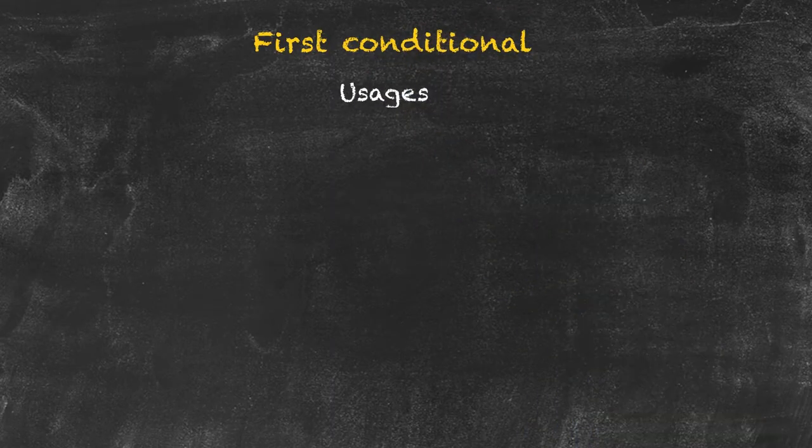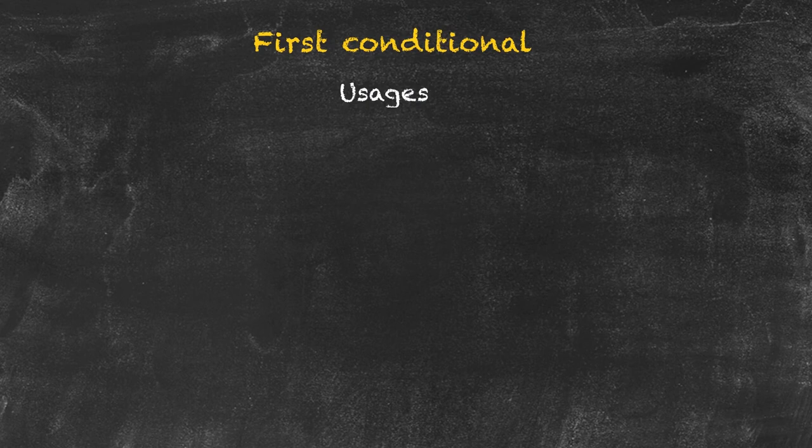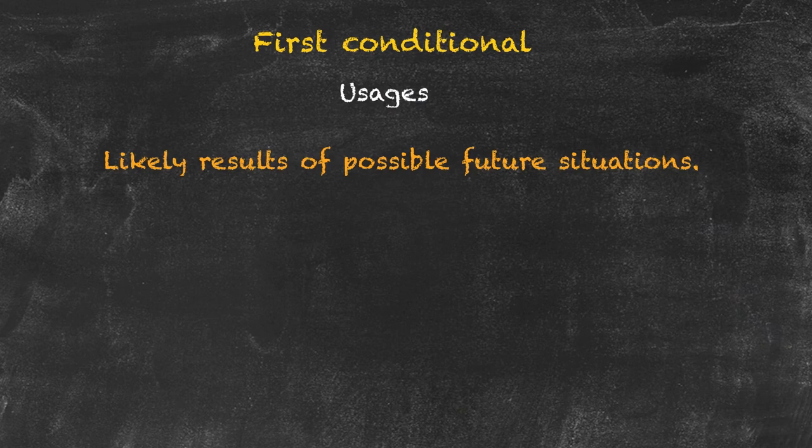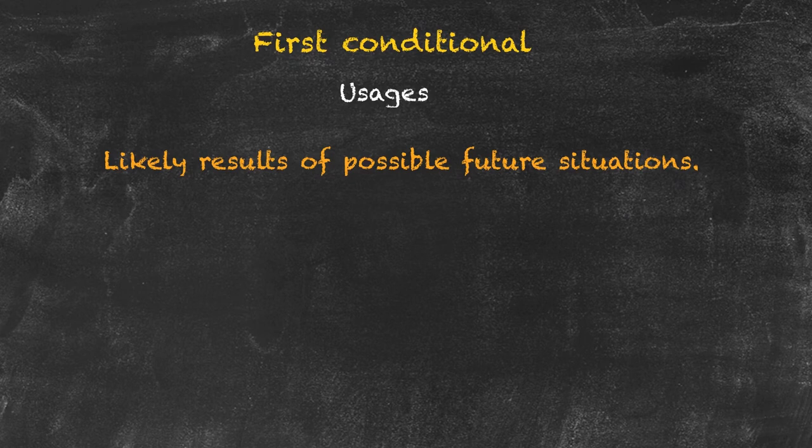Let's have a look at the usage for the first conditional. In this situation we're looking at a likely result of a possible future situation. Note that the word when would be inappropriate in this sentence because it would be an inappropriate level of confidence for winning the lottery. When really is only used for the zero conditional.